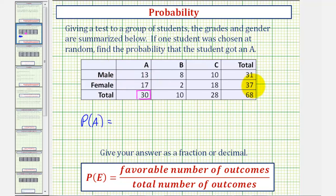And looking at the totals column, notice 31 males took the test, 37 females took the test, therefore there were a total of 68 test takers. So of the 68 test takers, 30 received A's.